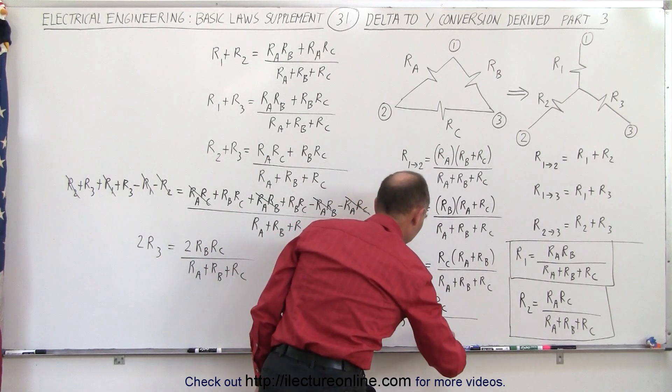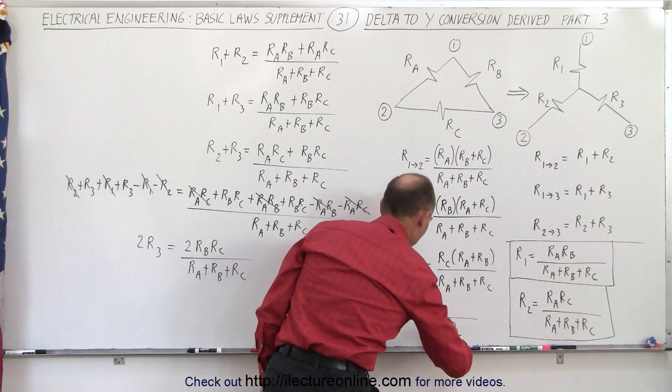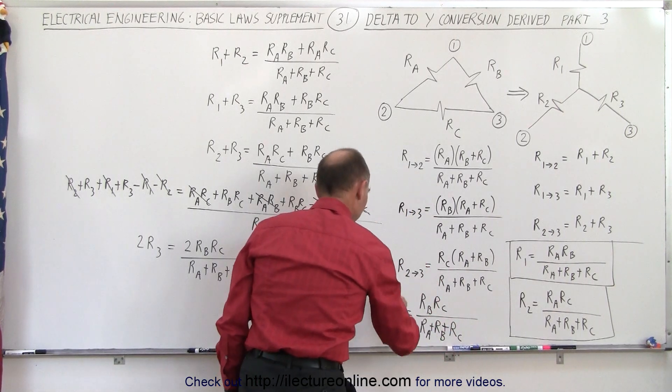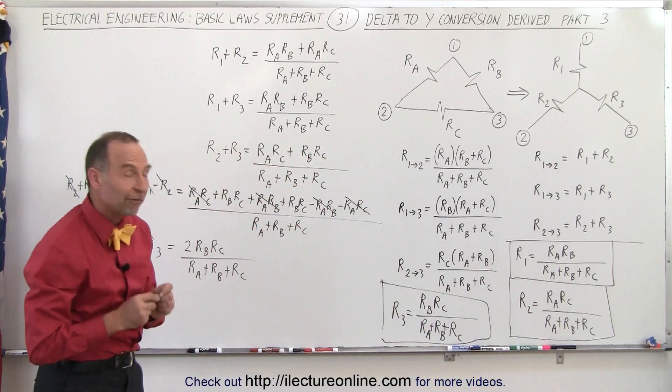R3 equals RB RC divided by the sum of RA, RB, and RC added together like this.